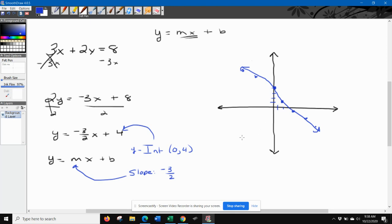It's a shortcut for graphing. You don't have to plot any more points. You don't have to find any more points. You don't have to find both intercepts. You find one intercept. You find the slope. You're done.